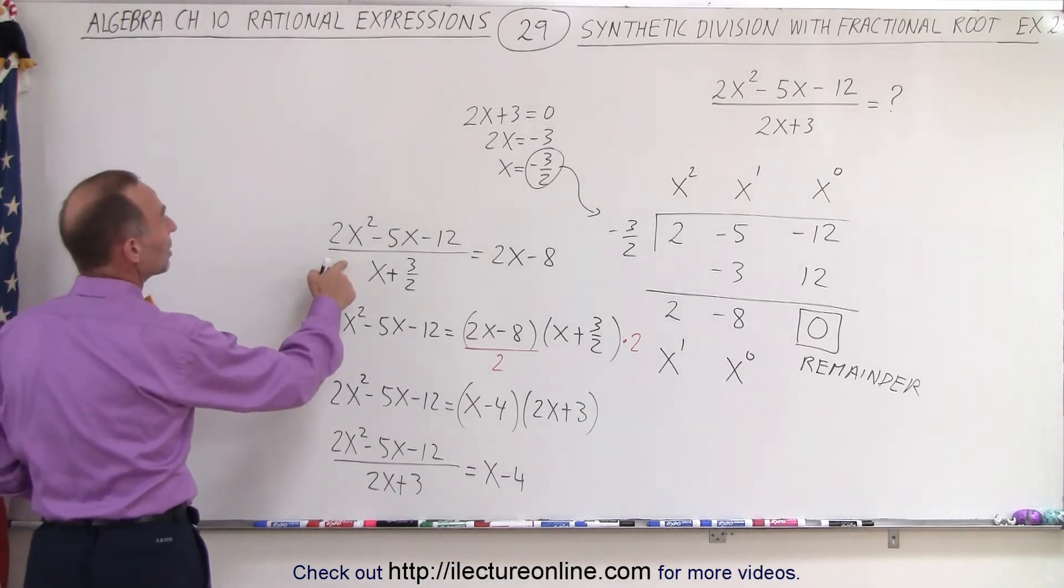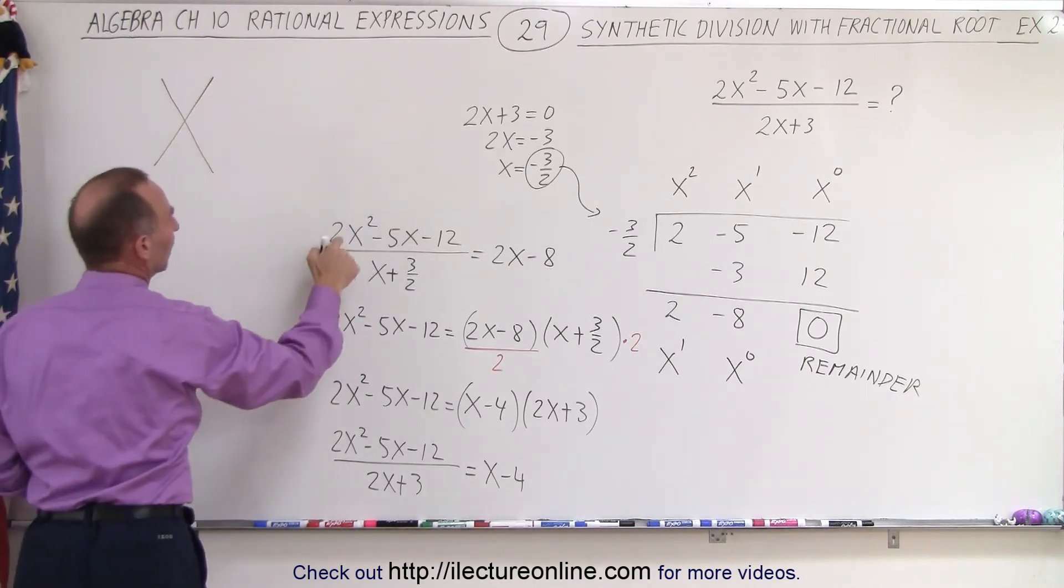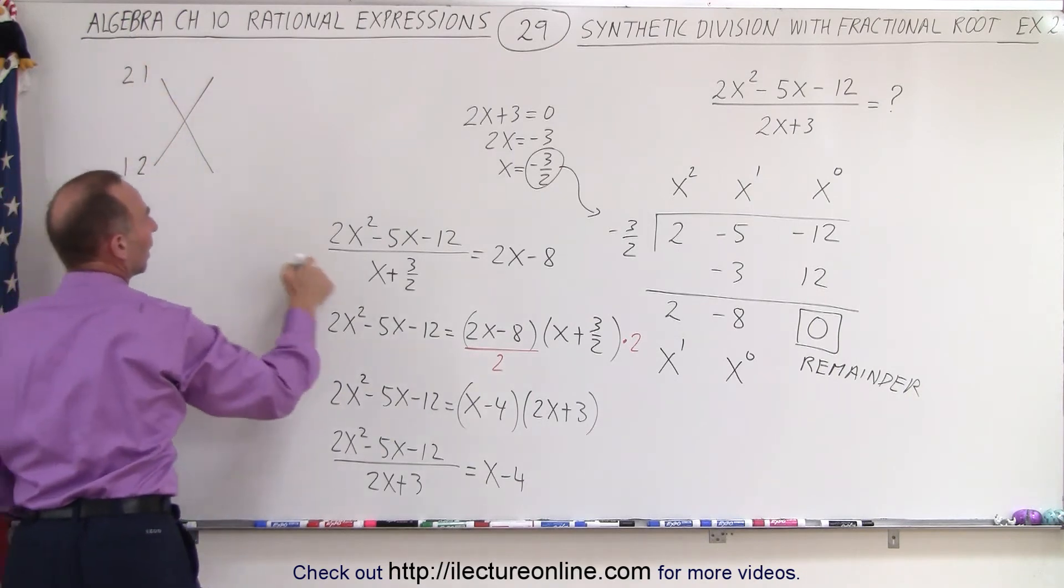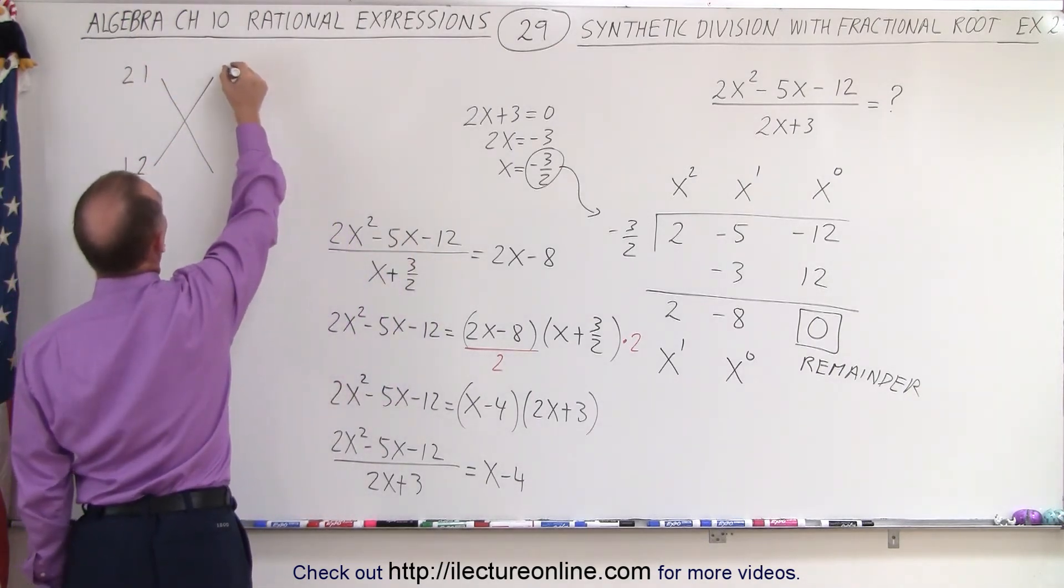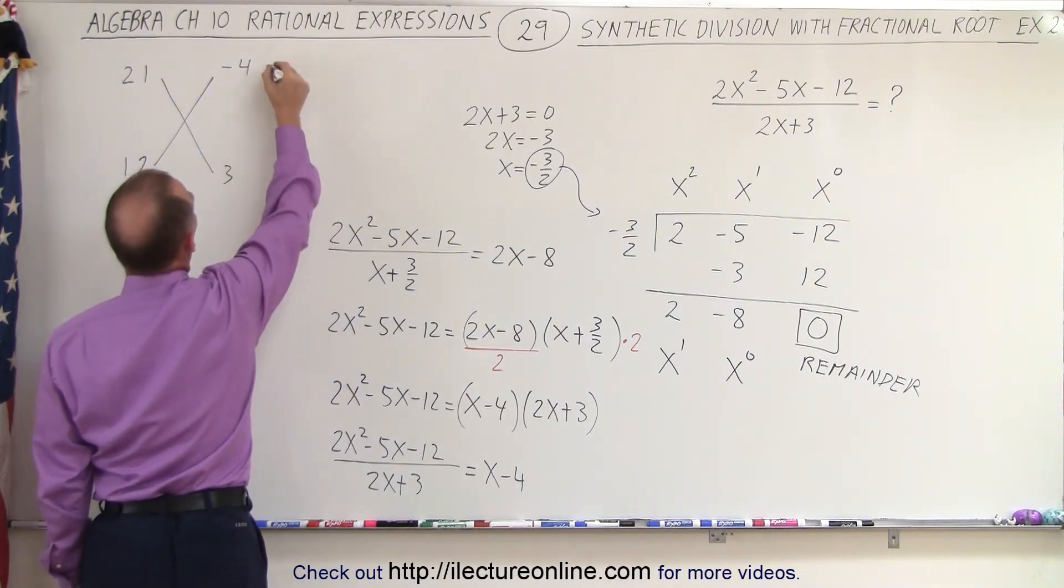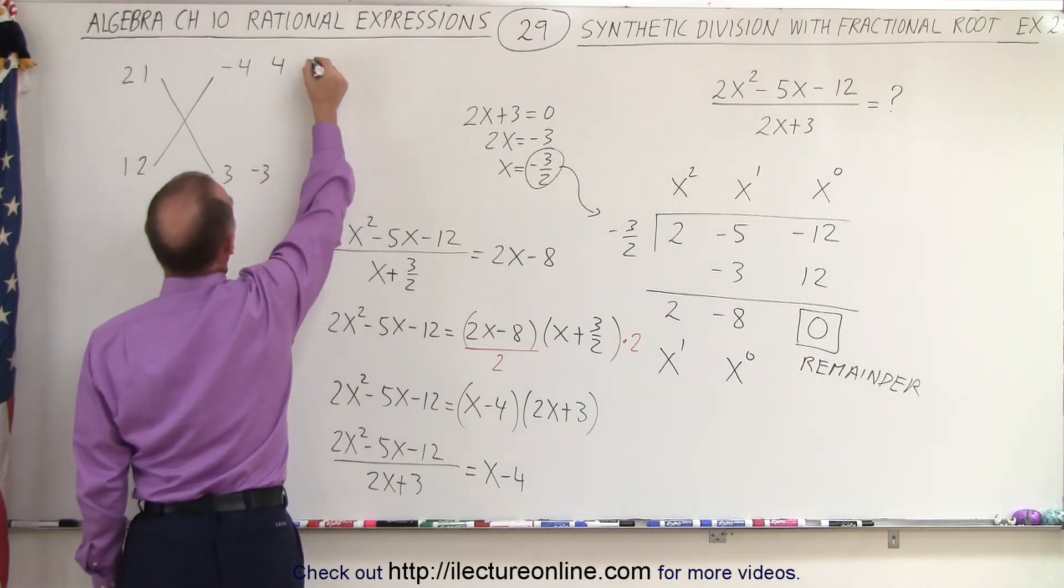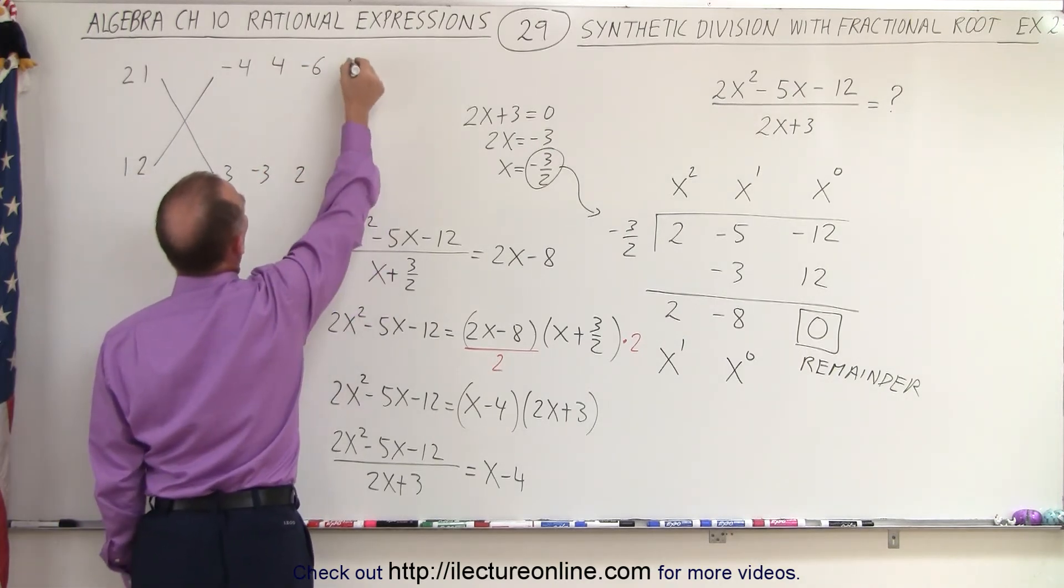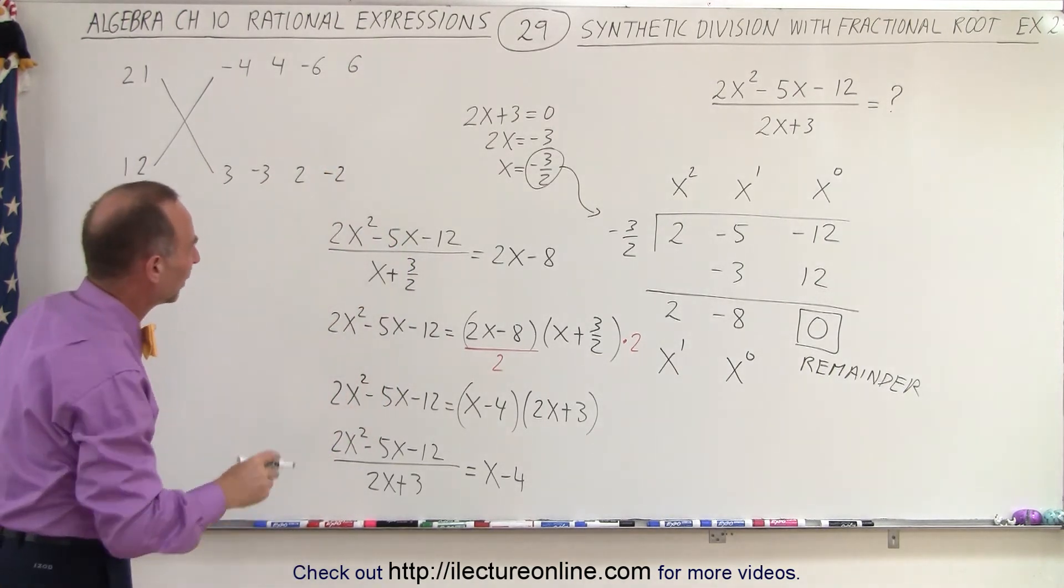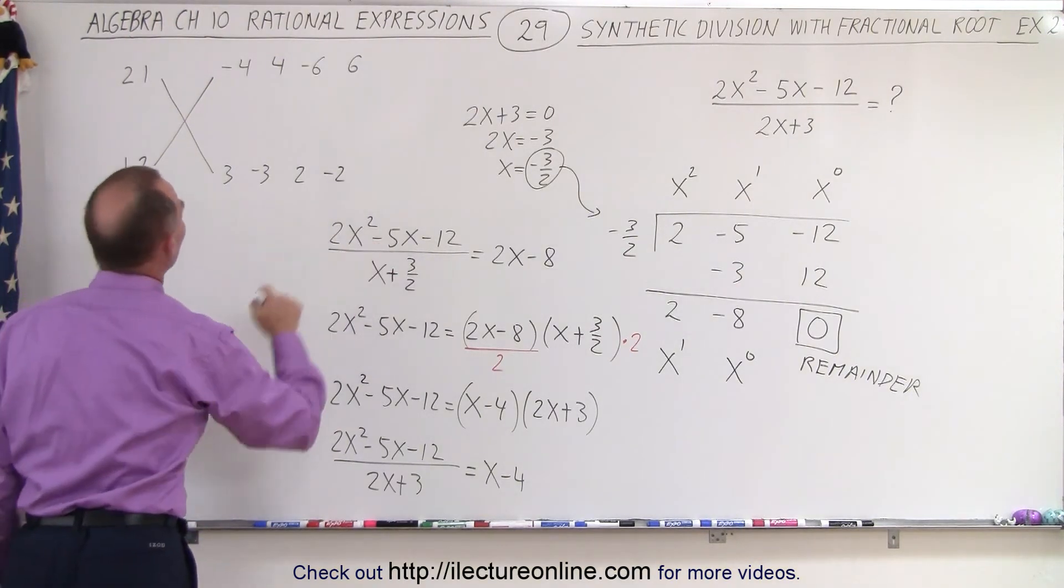And just to show you that that's really what we're doing here is factoring, let's try to factor this quantity here by using the FOIL method. So to get 2, we can either have 2, 1 or 1 and 2, and the last number minus 12. Well, we can get that by using minus 4 and plus 3, or plus 4 and minus 3, and maybe minus 6 and plus 2, or plus 6 and minus 2. And I don't think we need 12 and 1 because the middle term is not big enough for that. So which combination will give us a minus 5?